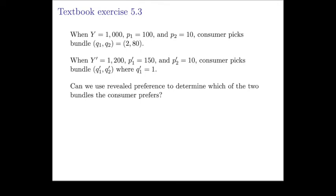Textbook exercise 5.3. This question gives you the consumer's income and prices and the bundle that they pick in two different scenarios. It asks us whether we could find out, using the notion of revealed preferences, which of the two bundles the consumer prefers.